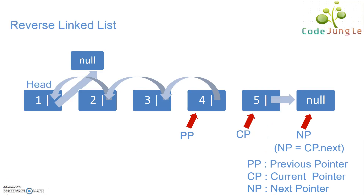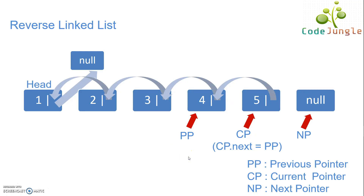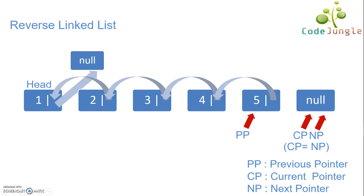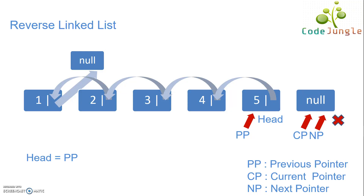Coming to the fifth iteration, as current pointer which is equal to node 5 is not equal to null, the next pointer will point to the current pointer's next node which is null. Current pointer's next will point to the previous pointer, and previous pointer will be current pointer and current pointer will be next pointer. As a conclusion, the fifth node is pointing to its previous node which is node 4 and is no more pointing to null. In the next iteration, current pointer is equal to null, so the iteration stops and we get our output — the reversed linked list where node 5 is the first node and node 1 is the last node pointing to null. The head node is the previous pointer, which is node 5.